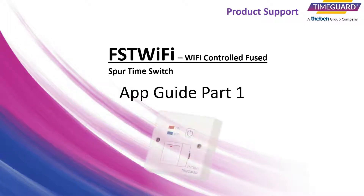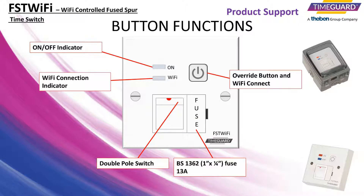Welcome to the FST Wi-Fi application guide brought to you by TimeGuard Customer Services. The FST Wi-Fi is a wireless app-enabled fused spur time switch. It features a permanent on or off facility as well as a boost function. It can be programmed from any location using a compatible Android or Apple device over a secure 4G or Wi-Fi connection. Please take a moment to study the control functions.